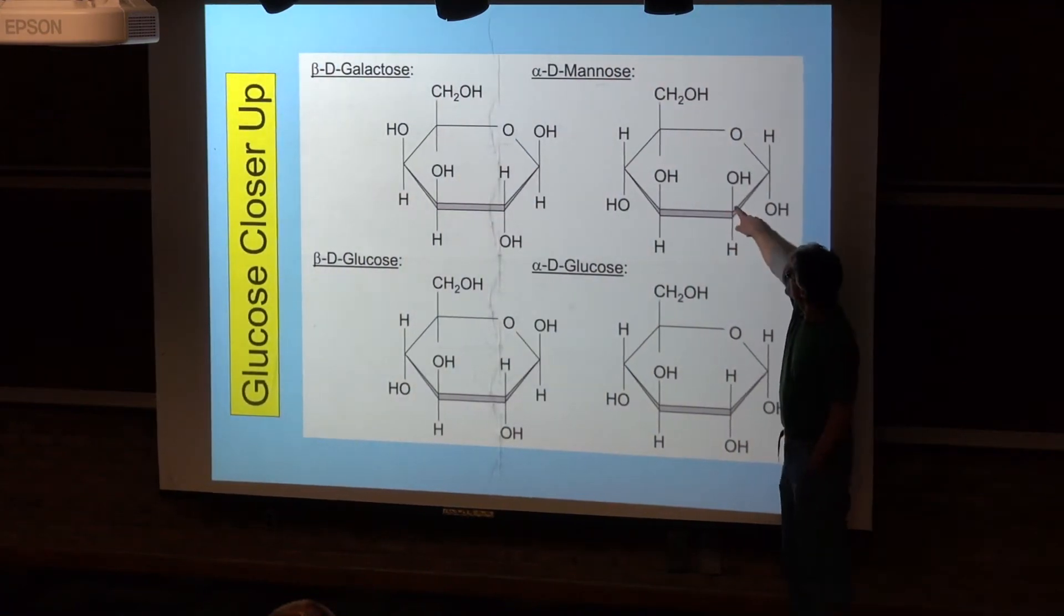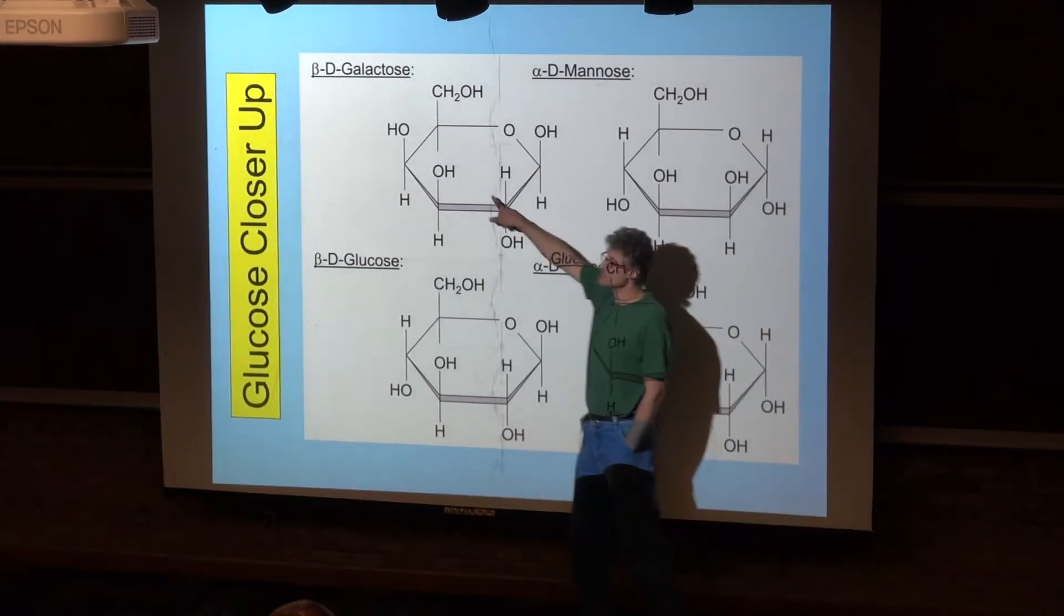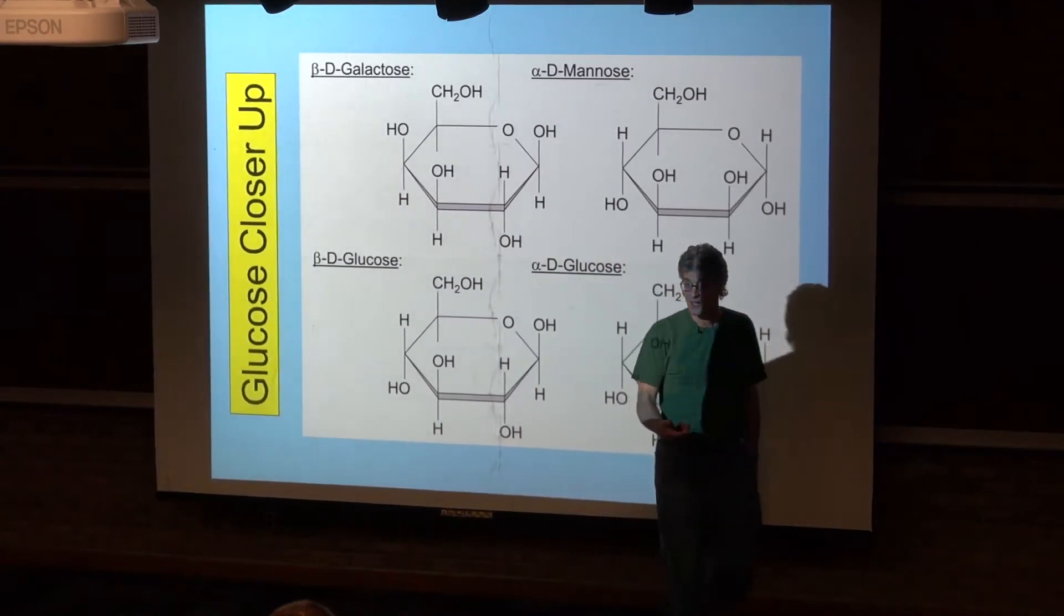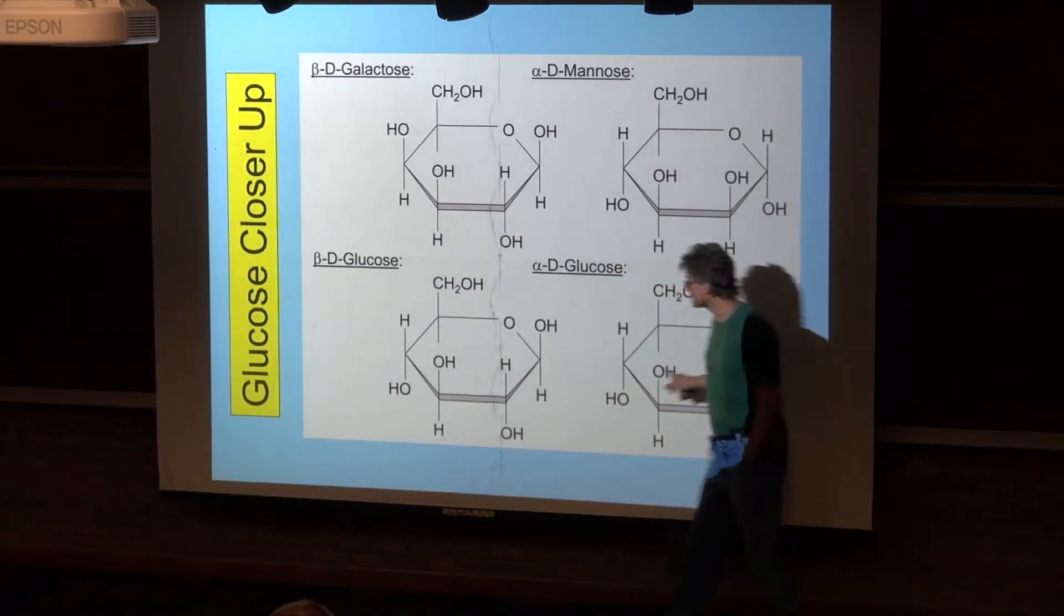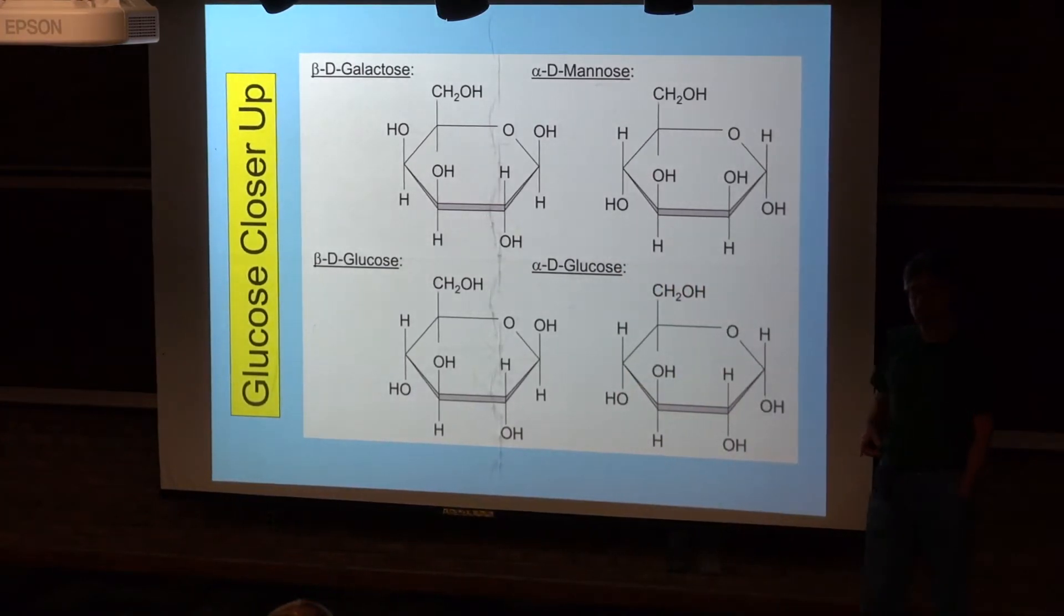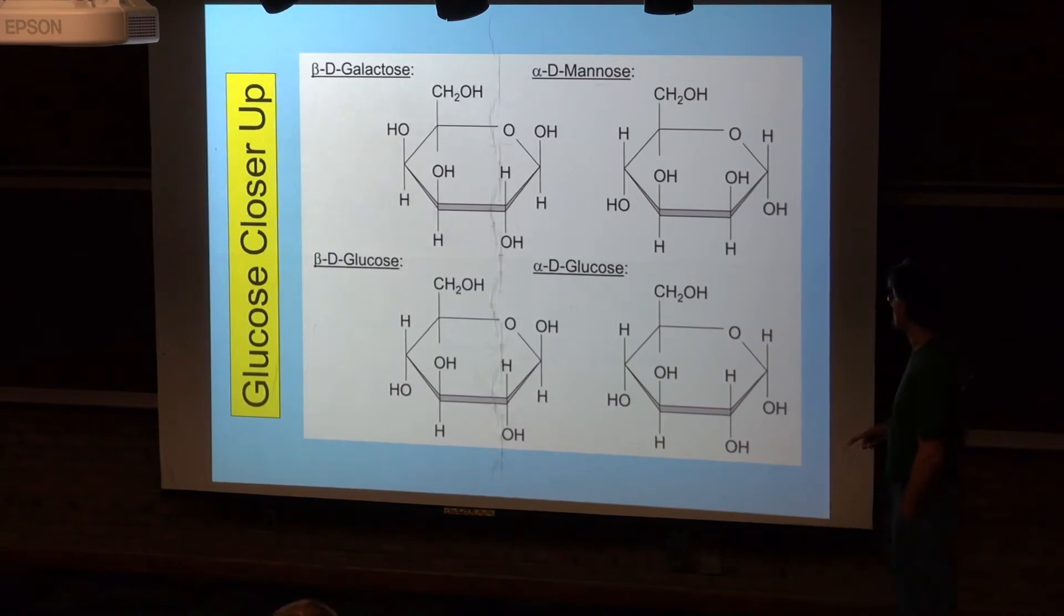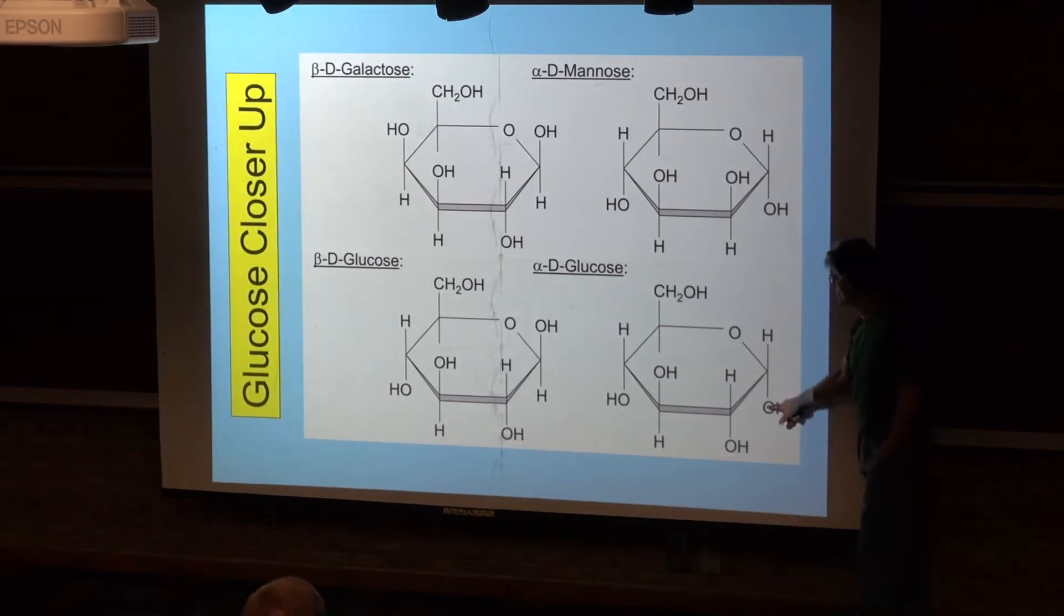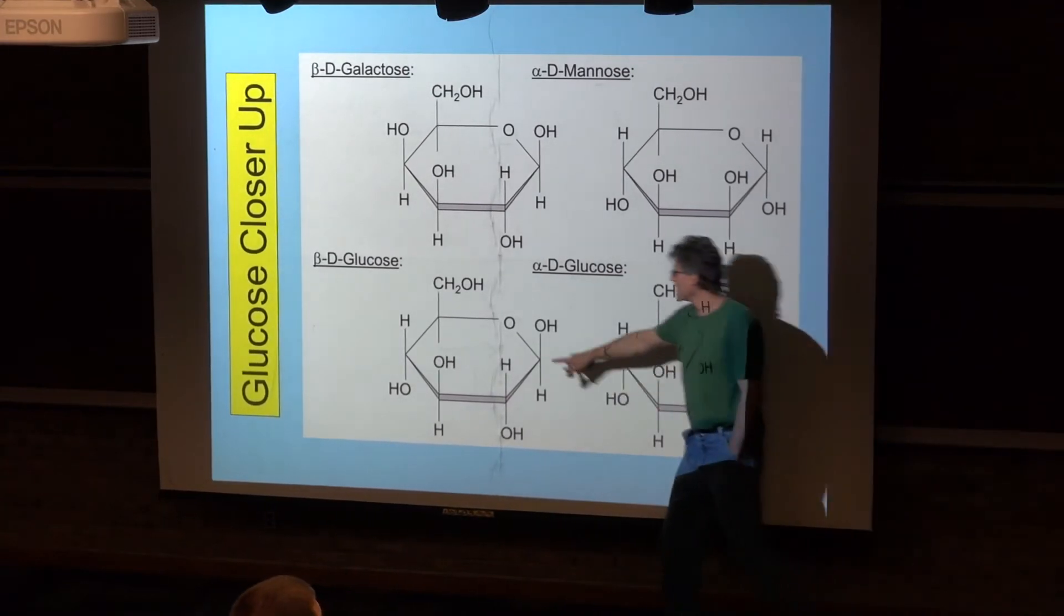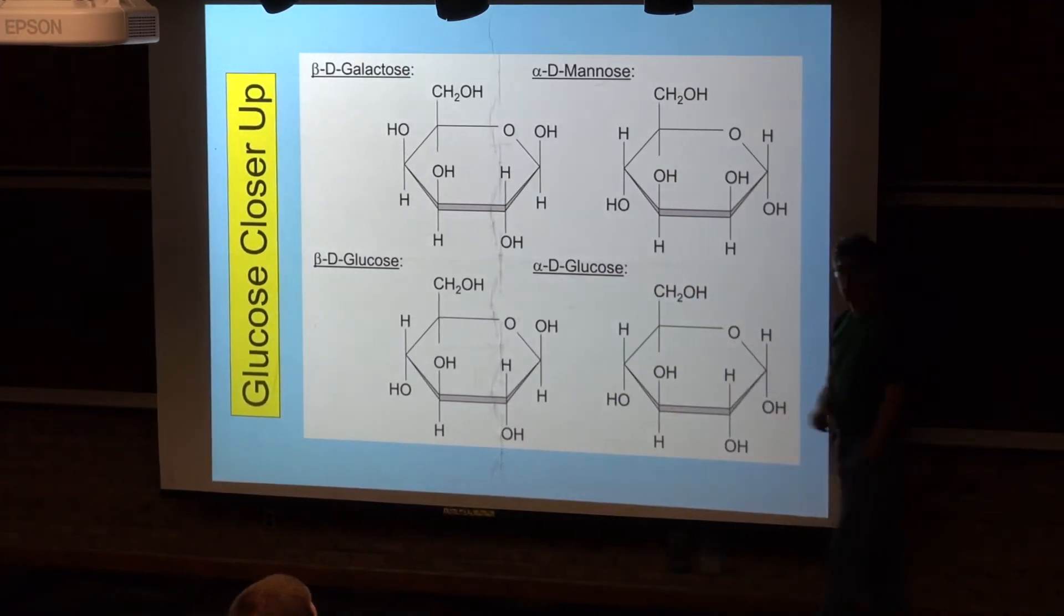So this is mannose, this is galactose, these are just kinds of monosaccharides. Down here is glucose, and you can see in the ring form of glucose they come in two varieties. One of them has the OH sitting up and the other has the OH down.